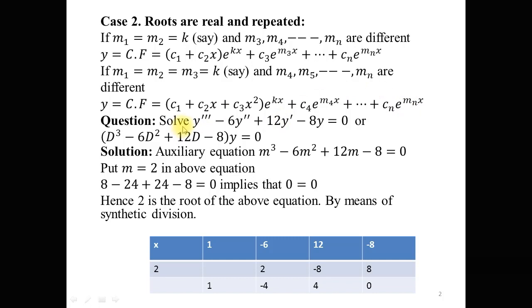Suppose we have example: y''' - 6y'' + 12y' - 8y = 0. This differential equation can be written as (D³ - 6D² + 12D - 8)y = 0.